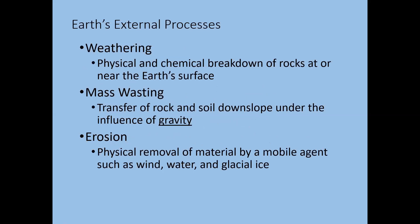There are several external processes discussed in this chapter: weathering, mass wasting, and erosion. Physical or mechanical weathering refers to the chemical breakdown of rocks at or near the earth's surface. Mass wasting gets its own category because the major power behind it is gravity. Erosion is the physical removal of weathered particles by a moving agent like wind, water, and glacial ice — with running water being by far the major force that moves material.